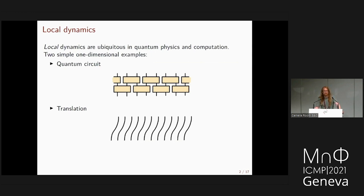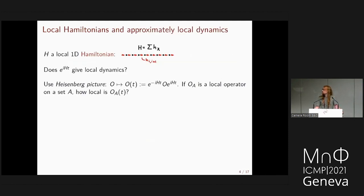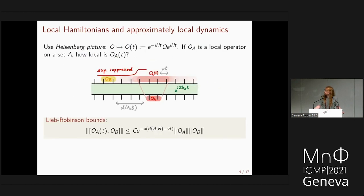This talk is about local quantum dynamics, which are ubiquitous in real physical systems. Examples include a quantum circuit that preserves locality in a 1D example, and translation — shifting the system by one site to the right. Another example: starting from a strictly local Hamiltonian and looking at the unitary dynamics generated by time evolution. The Lieb-Robinson bounds are the key quantitative result: if you take an operator supported on a finite set, time evolve it, and look at the commutator with an operator supported outside the light cone, the commutator is exponentially suppressed with distance.